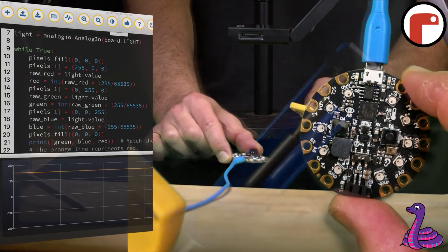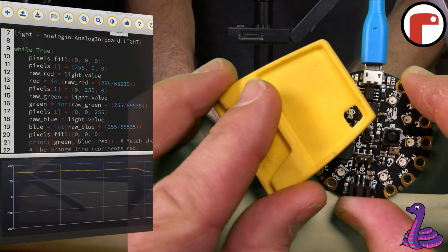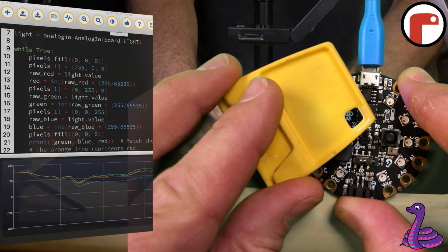With a non-primary color such as yellow, we see both the red and green rise up in the plotter.